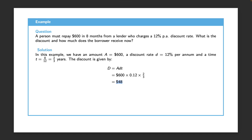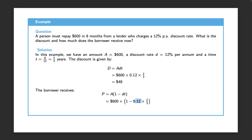That answers part one. For how much the borrower receives now, we use P = A(1 - dT), substituting $600 for A, 0.12 for d, and 2/3 for T, which gives us $552. Alternatively we could simply say P = A - D = 600 - 48 = $552, but I wanted to use both equations derived on the previous slide as an example.